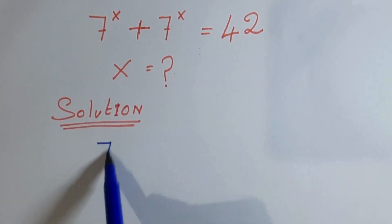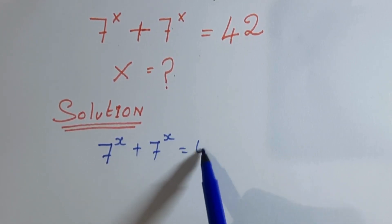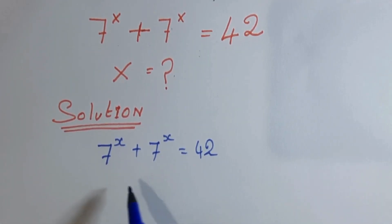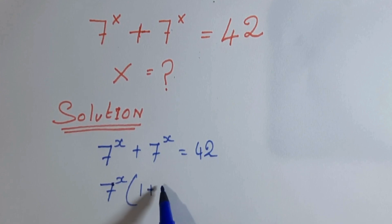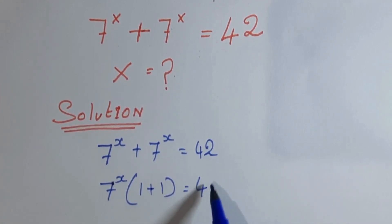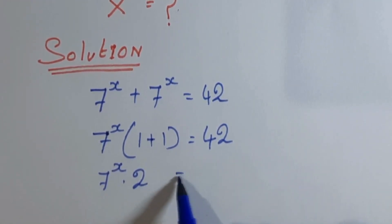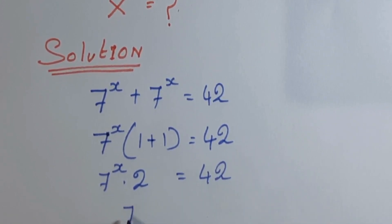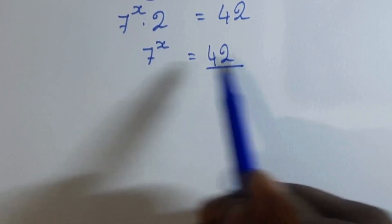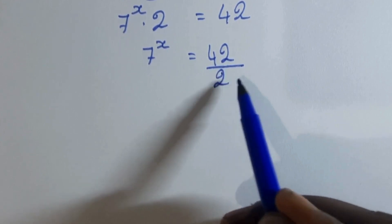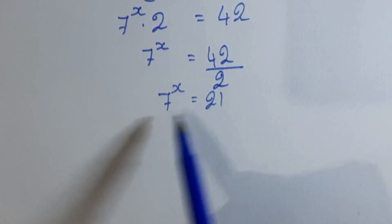Today we are going to solve the equation 7 to the power of x plus 7 to the power of x equal to 42. We are taking 7 to the power of x common: 7 to the power of x into (1 plus 1) equal to 42, so 7 to the power of x into 2 equal to 42, therefore 7 to the power of x equal to 42 divided by 2, which is 21.